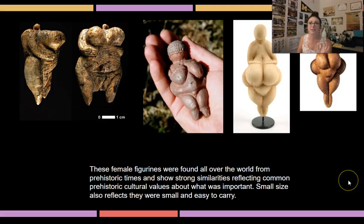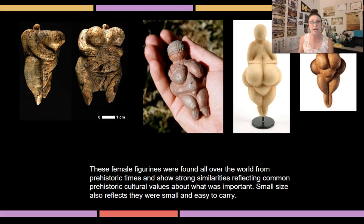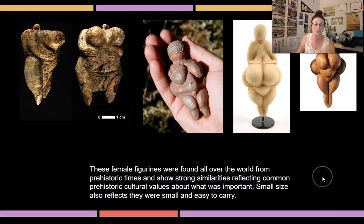Because these people migrated as nomadic hunter-gatherers, their culture was shared pretty much all over the world. Venus figurines — goddess-like figures — were found in many different locations across the world but share striking similarities, showing common values despite people not necessarily interacting. They're also small because these were portable objects suited to the needs of nomadic groups.